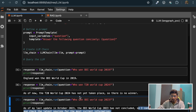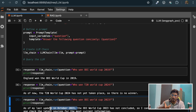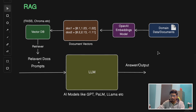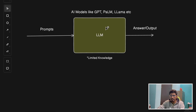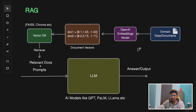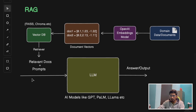To overcome this limitation of limited knowledge, we will use RAG - that's where RAG comes into picture. As you can see, the architecture of RAG is quite different from the architecture of LLM. In LLM, we just had the LLM model - prompt was the input and answer was the output. But in RAG, along with the LLM layer, we have multiple layers involved in it.